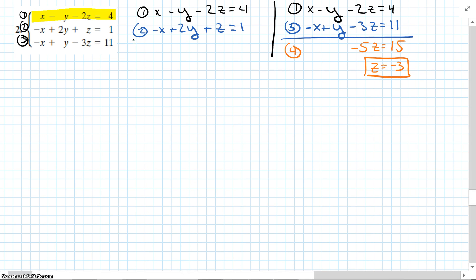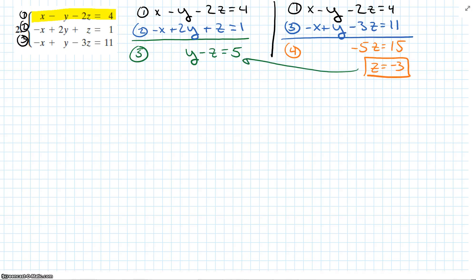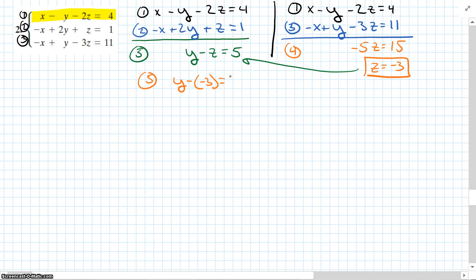Let's go back and work equations 2 and 1, summing those to get equation 5. x minus x cancels, so that's 0. Negative y plus 2y is y. Negative 2z plus z is negative z. 4 plus 1 is 5. So I get y minus z equals 5. Now let's plug in what we know: z equals negative 3. So y minus negative 3 equals 5, that's y plus 3 equals 5. Subtract 3 from each side — y equals 2.